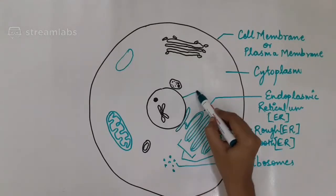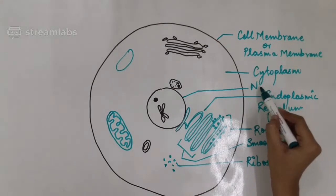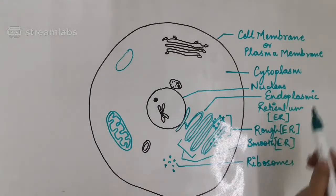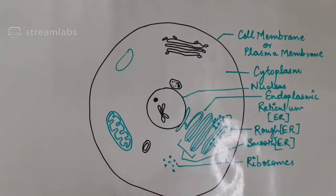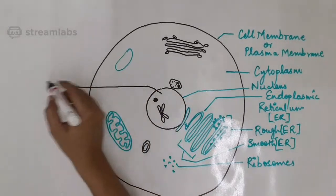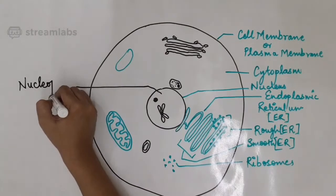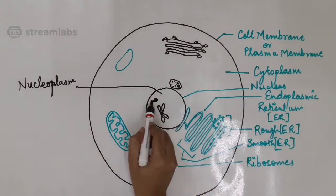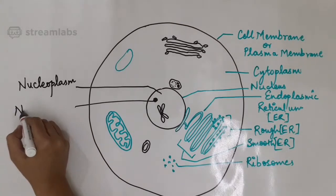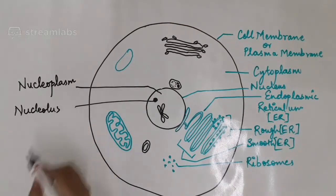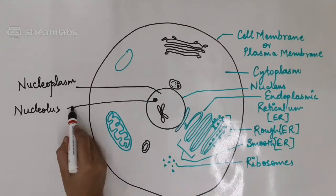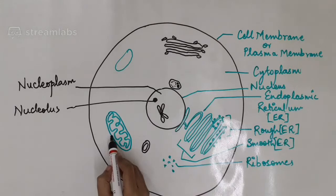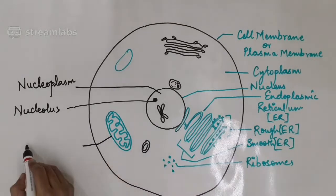The nucleus is the control center of the cell. It contains the liquid inside it named nucleoplasm. Inside the nucleoplasm, a small spherical body known as the nucleolus is present. The powerhouse of the cell, that is the mitochondria, is also found within the cell.